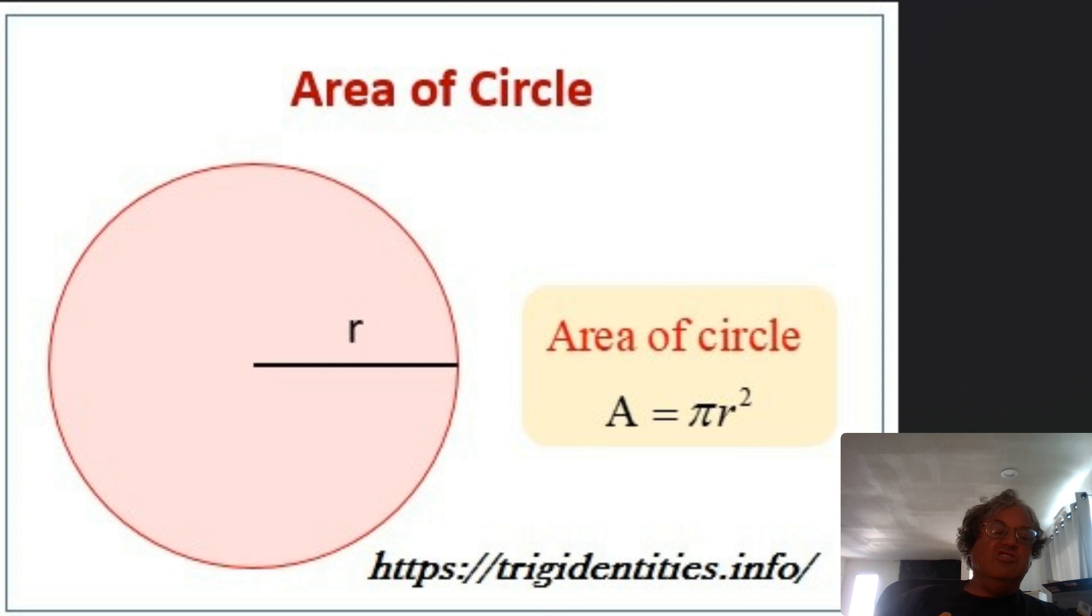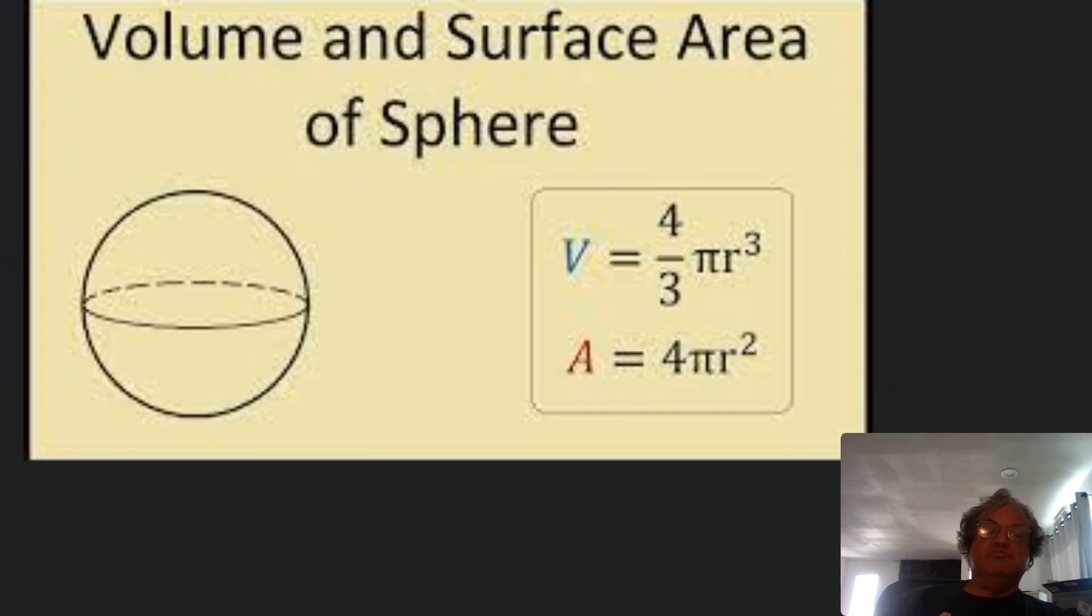And not only that, but you can go from circles to spheres. And here's formulas for the volume and the surface area of a sphere. Volume is 4 thirds pi r cubed. Area is 4 pi r squared. So it's very useful. It already appears in these four formulas.